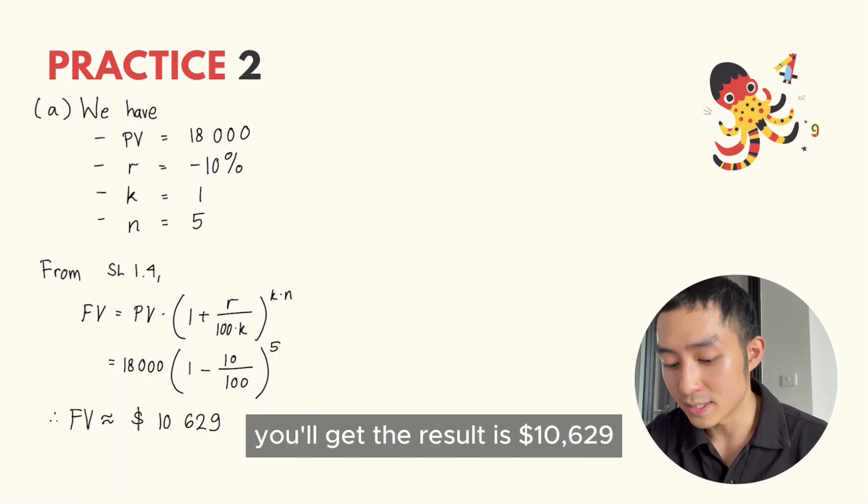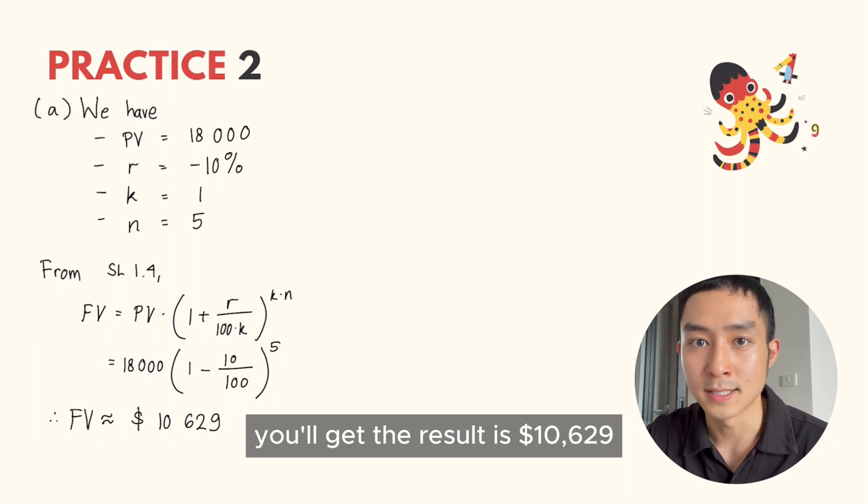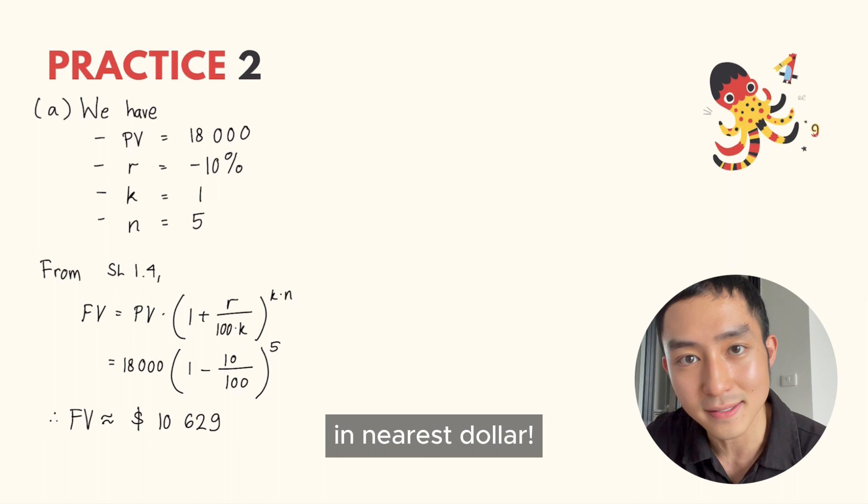Solving with GDC, you'll get that the result is $10,629. Remember that the question wants you to answer to the nearest dollar.